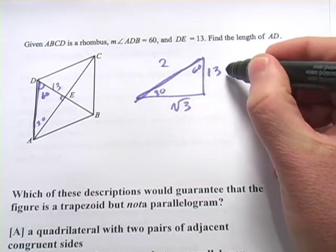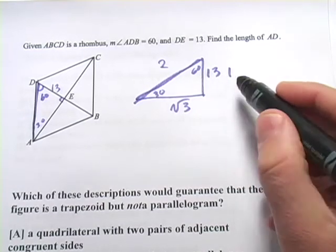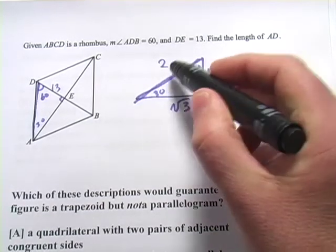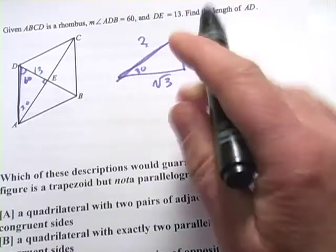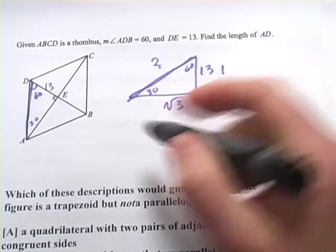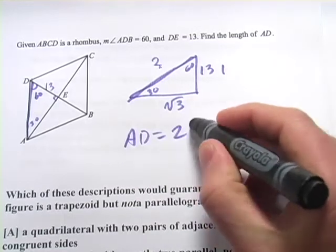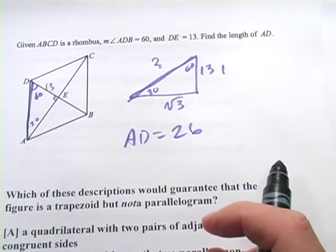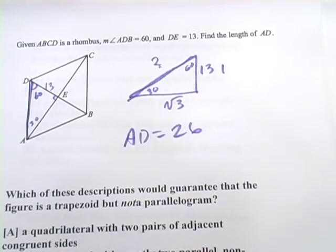So, all we have to do is figure out the ratio between 1 and 13. Well, 13 is 13 times 1, so to figure out the 2 side, we just have to take 13 times 2. So, AD equals 26. All right, let's look at a few more.